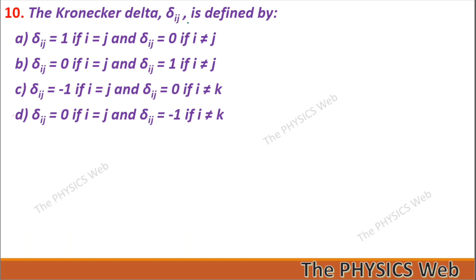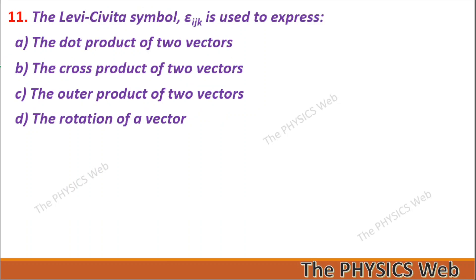Question 10: The Kronecker delta δ_ij is defined as: δ_ij = 1 when i equals j, and 0 when i does not equal j — so A is your correct option. Question 11: The Levi-Civita symbol is used to express the cross product of two vectors — so B is your correct option.